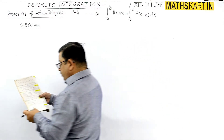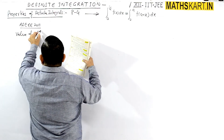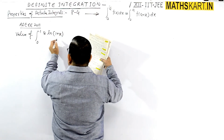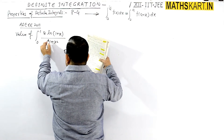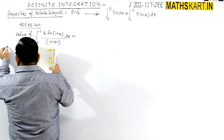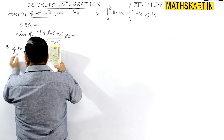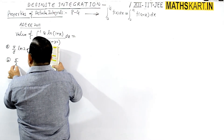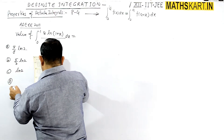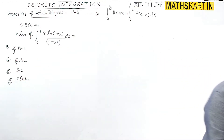Next question from AIEEE 2011. Find the value of the integral from 0 to 1 of 8 ln(1 plus x) divided by (1 plus x squared) dx. Options: A is pi by 8 times ln 2, B is pi by 2 times ln 2, C is ln 2, and D is pi times ln 2.